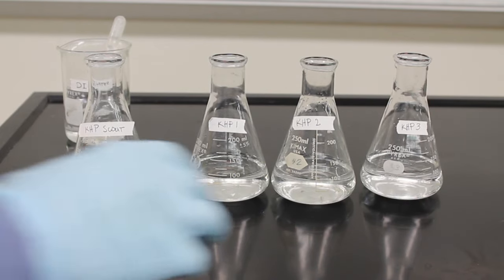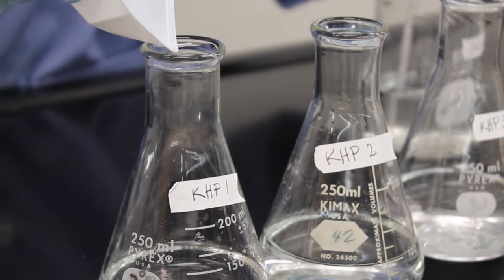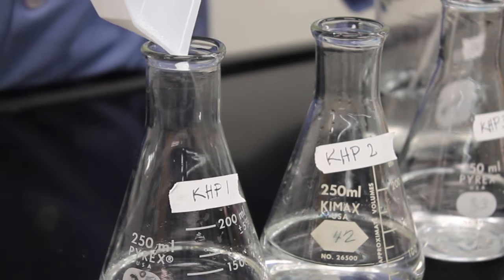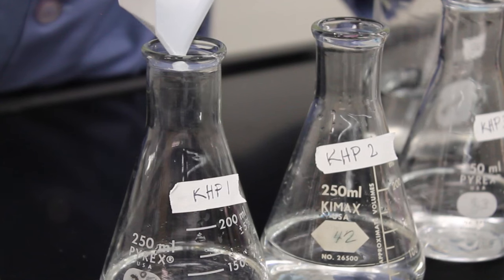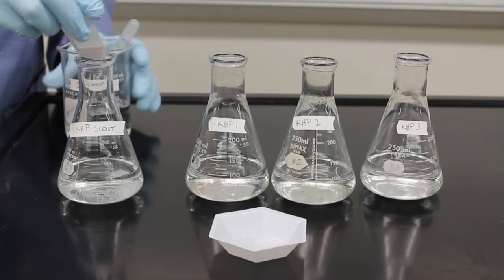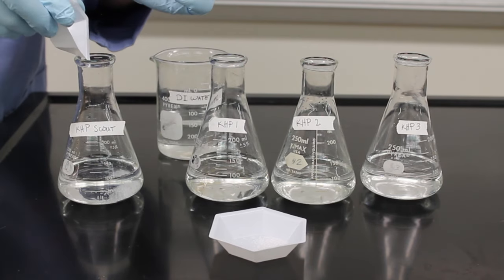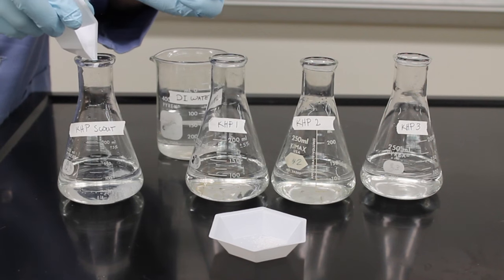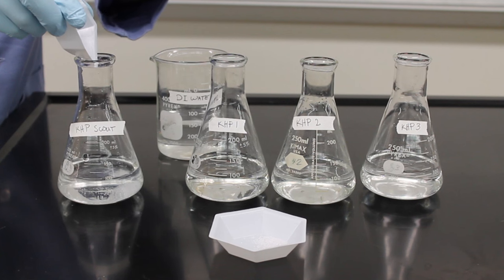Next, you will need to transfer your KHP to flasks that contain approximately 100mL of water. The exact amount of water doesn't make a difference, but the exact mass of KHP does. Remember, this is deionized water, not regular tap water. Rinse your weigh boats out 3 or 4 times with deionized water to ensure you get all your KHP transferred. This technique is called a quantitative transfer.